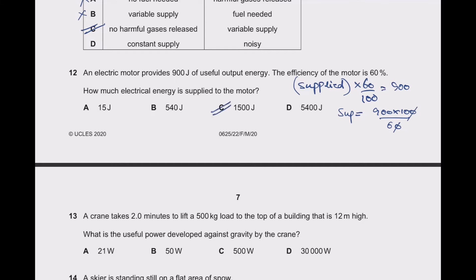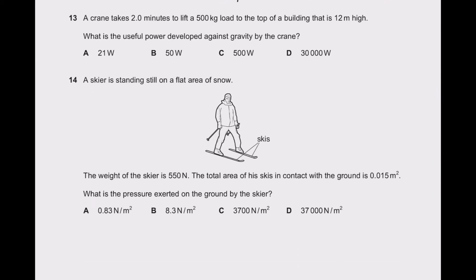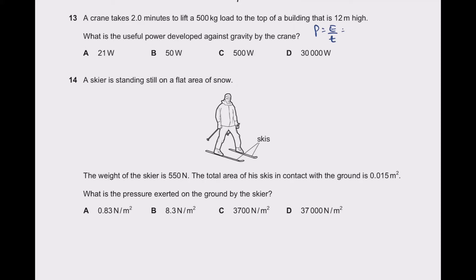Question 13: a crane takes 2 minutes to lift a 500 kg load to the top of a building 12 meters high. Power equals energy divided by time; energy is gravitational potential energy: mgh = 500 × 10 × 12. Time is 2 minutes = 120 seconds. So power equals 60000 / 120 = 500 watts.